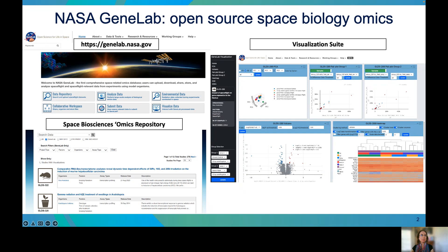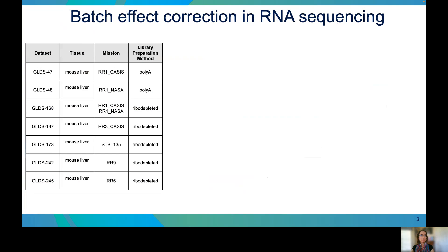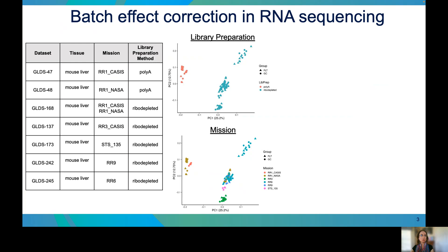Our current work focuses on understanding and mitigating technical batch effects in a specific type of space omics data: RNA sequencing. To better understand the presence of batch effects in space biological RNA sequencing data, we combined seven GeneLab RNA sequencing datasets from space-flown and ground-controlled mouse liver. These datasets come from experiments flown on several different flight missions, and the RNA sequencing libraries were prepared with two different library preparation methods: polyadenylation and ribo-depletion. We highlight these two technical factors because after a review of PCA plots, we found that they contribute most strongly to batch effects in the combined datasets.